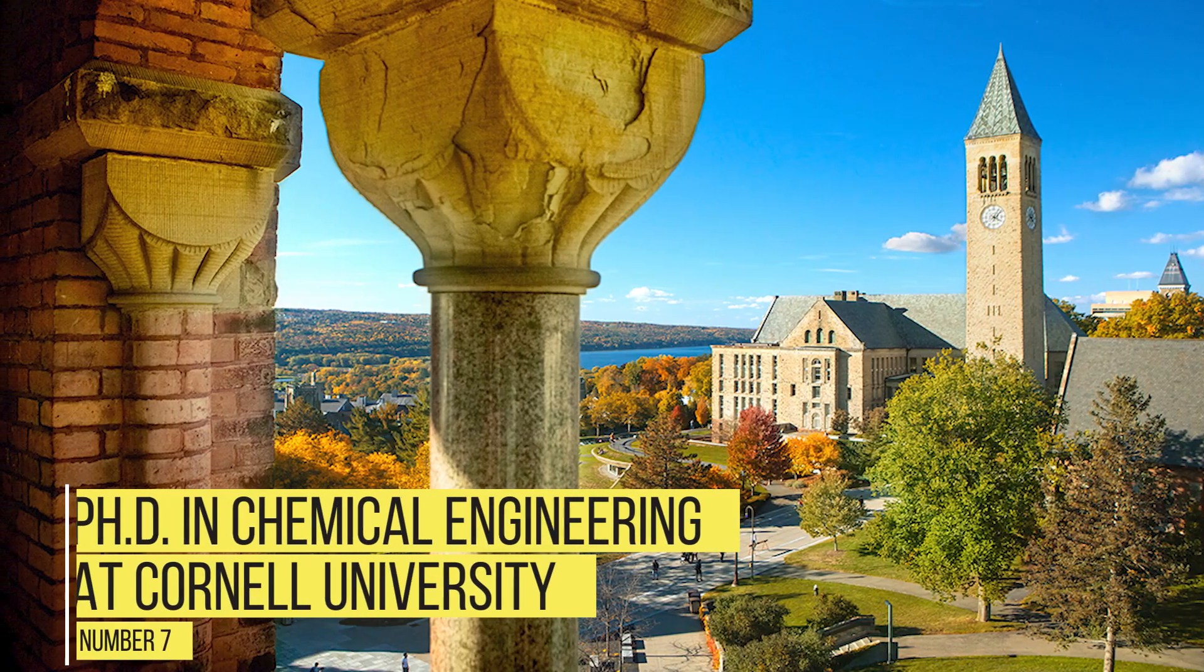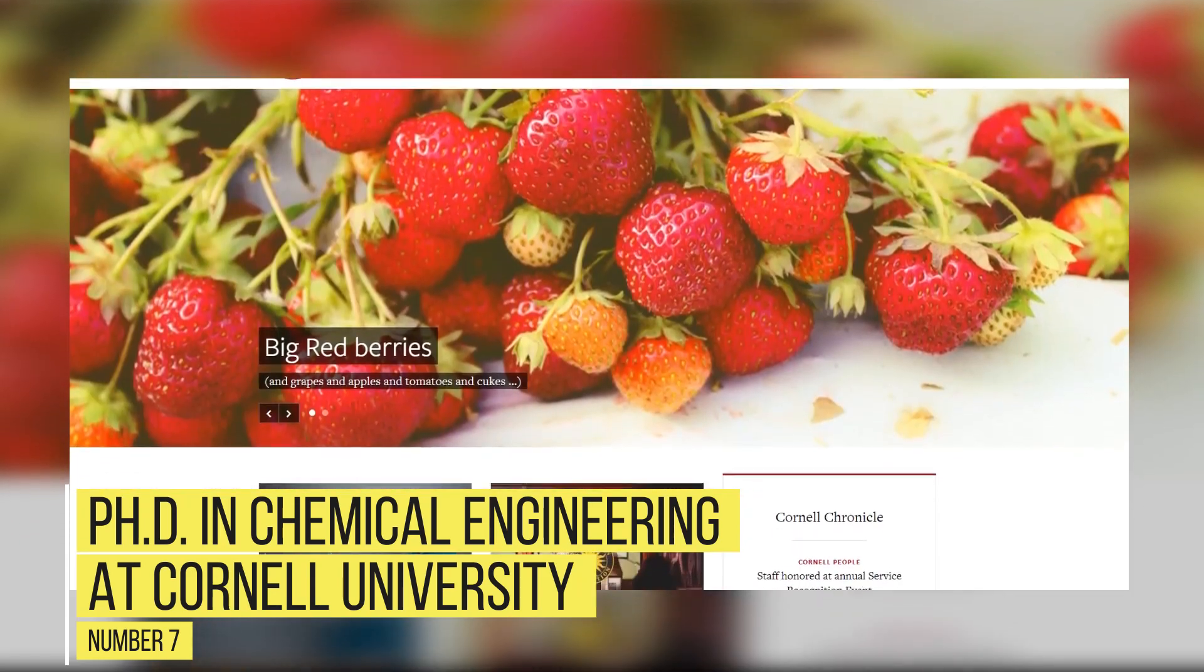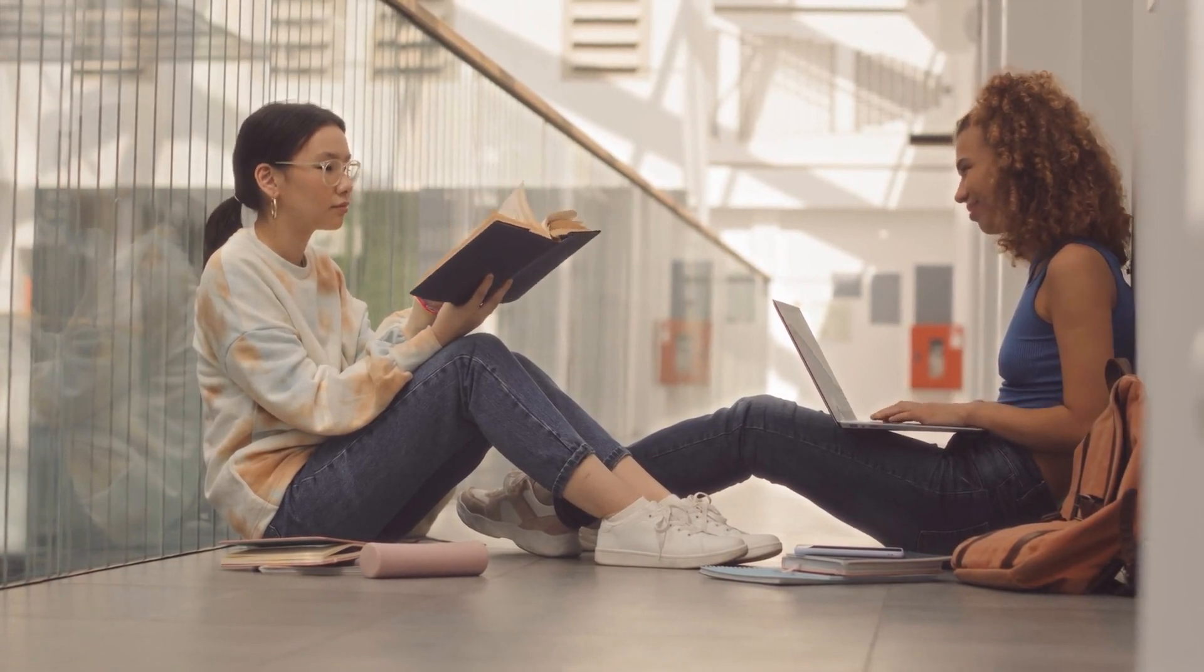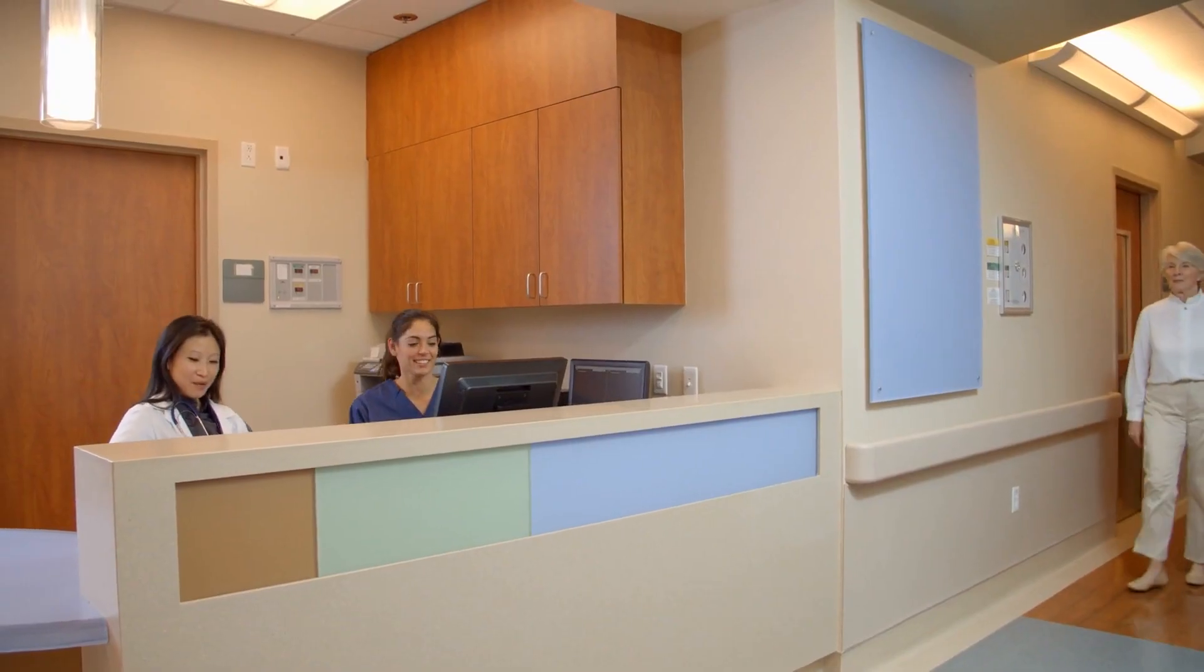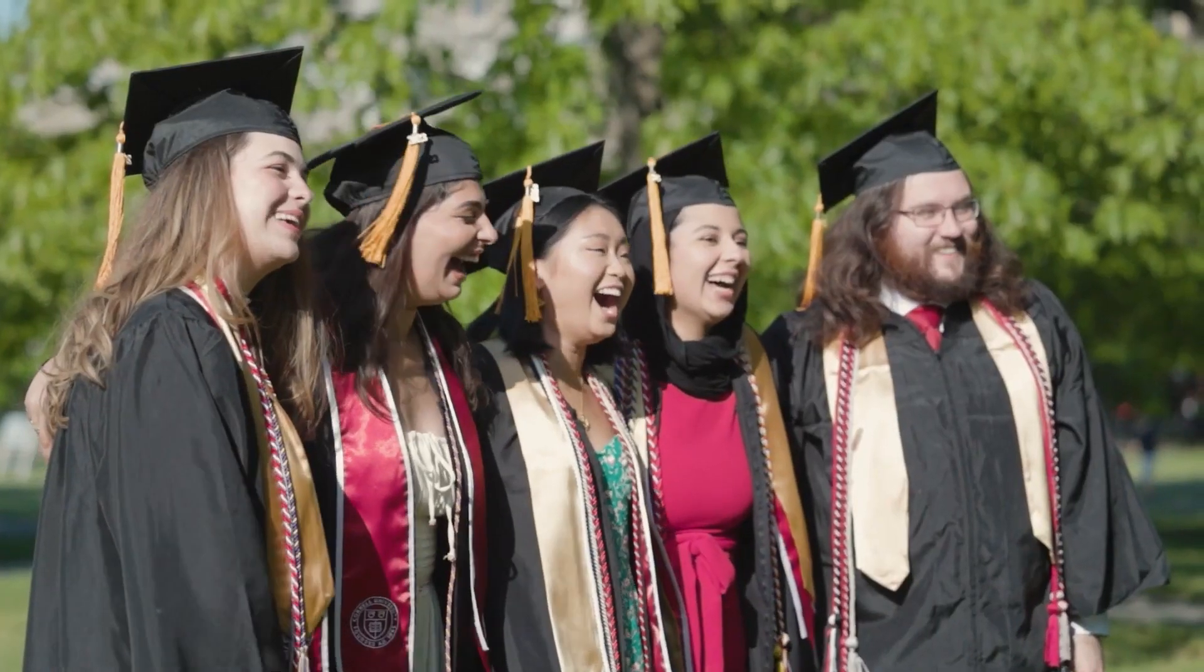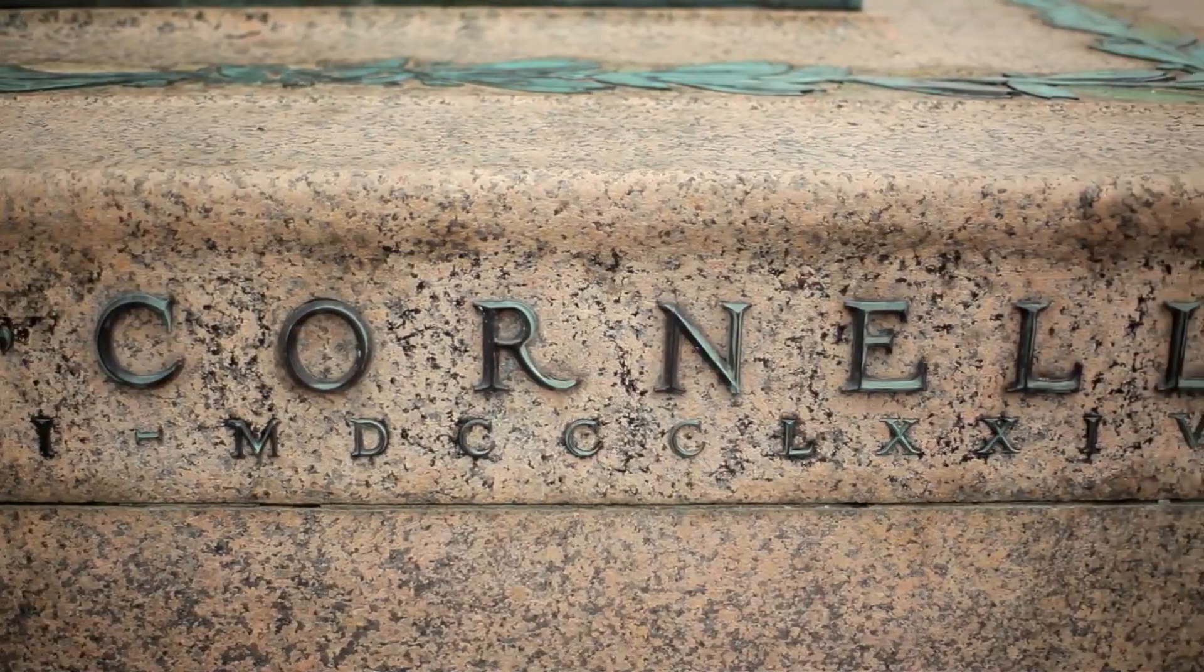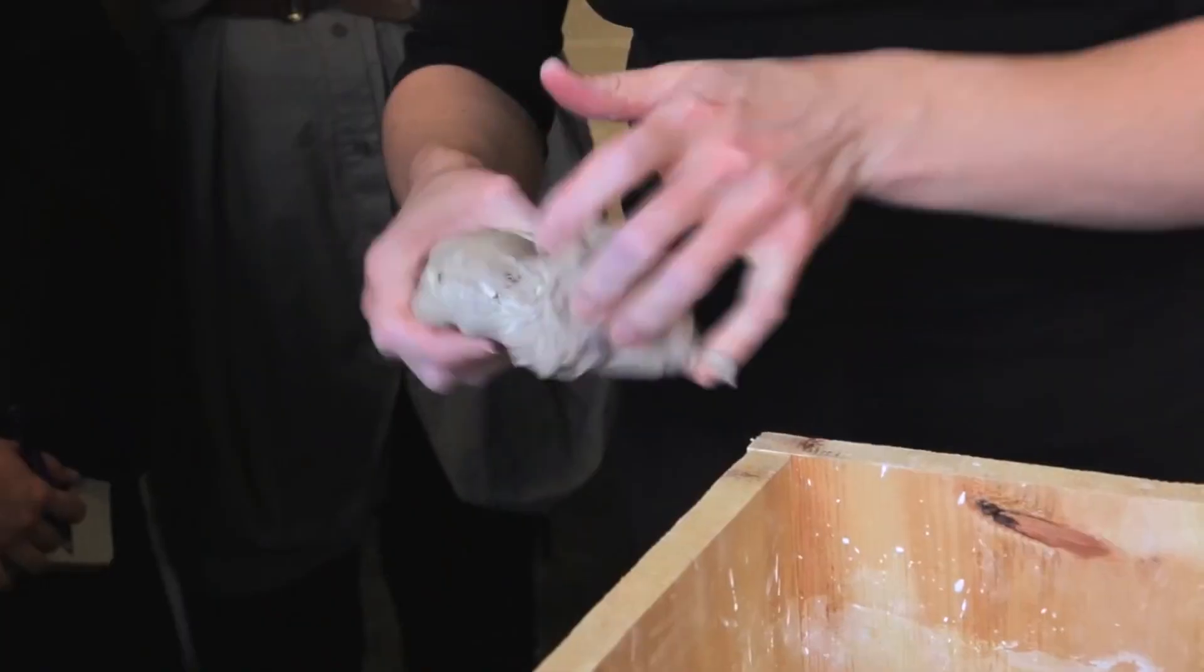Number 7: PhD in Chemical Engineering at Cornell University. According to Cornell University's website, all students admitted to the Chemical Engineering PhD program at the New York School receive a full tuition waiver, stipend, and health insurance. This funding can come from a fellowship, research assistantship, or teaching assistantship, and full stipends are given for nine months with the likelihood of additional summer aid. Students are offered flexibility in their specialization during this program, though they are required to minor in two subjects and complete a thesis.